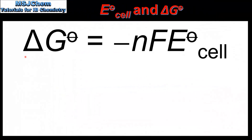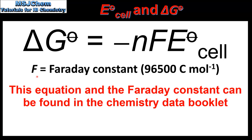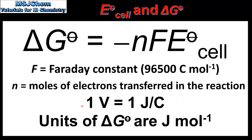Here we have the equation to calculate the delta G using an E cell value. Delta G is equal to negative N multiplied by F multiplied by the cell potential, where F is the Faraday constant, which has a value of 96500 coulombs per mole, and N is the moles of electrons transferred in the reaction. Because 1 volt is equal to 1 joule per coulomb, the units of delta G in this equation are joules per mole. To convert to kilojoules per mole we can divide by 1000.